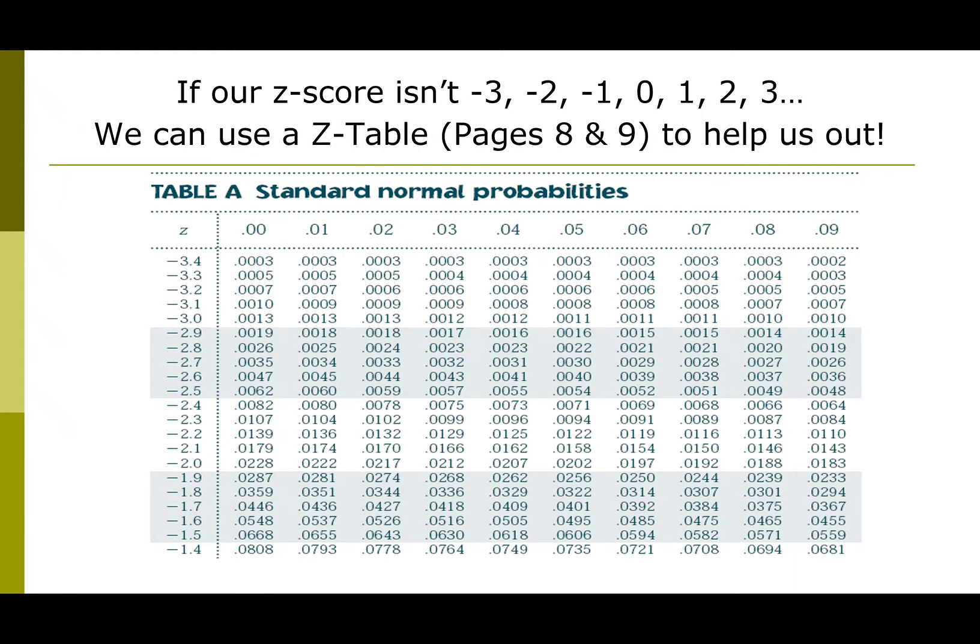In our last video we looked at how to use the empirical rule to calculate percentiles and what percentage of values fell between different z-scores, but those used nice z-scores of negative three, negative two, negative one, zero, one, two, three. Sometimes people do not fall at these integer numbers, so we have to find values using z-tables, which will be in your notebook on pages eight and nine.